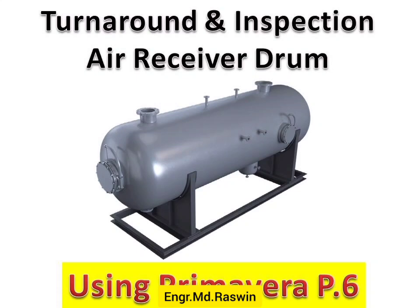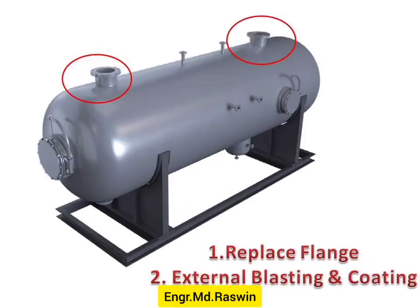Assume our company name is Rasswin Contracting Company, and our company got a new project in an oil and gas facility. Our project is to do turnaround and inspection for an air receiver drum. We are going to create planning and scheduling using Primavera. As per our scope of work received from our client, our work is to shut down the drum, then replace two flanges on the top of the drum, and after that we need to do external blasting and coating.